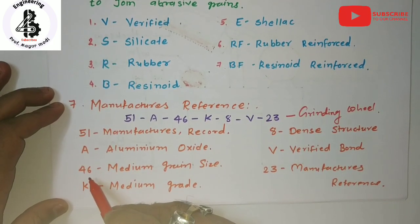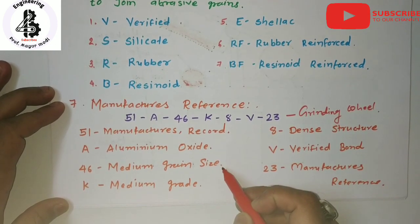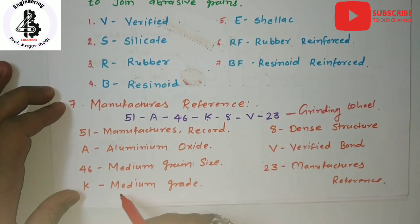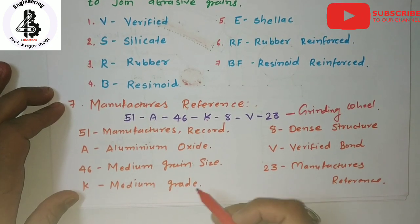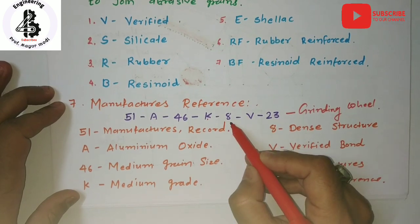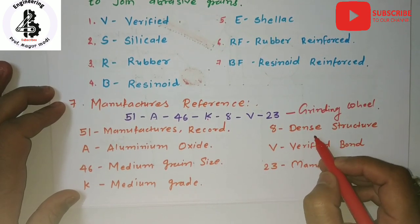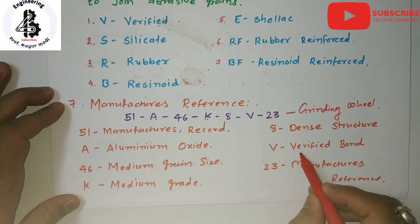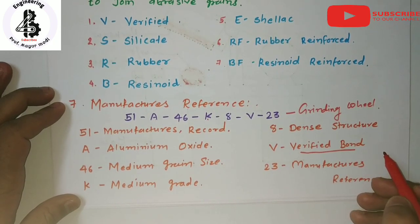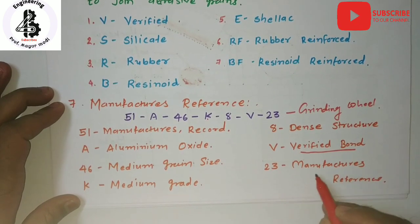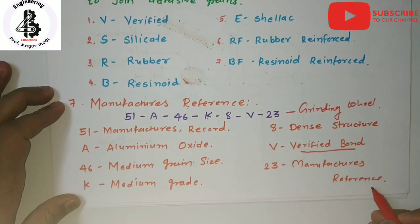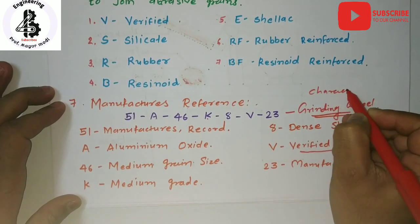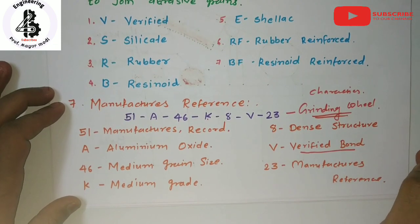Then 46 represents a medium kind of grain size being used to make the grinding wheel. K is once again an indication of medium grade used for manufacturing the grinding wheel. Then 8 represents the 8th grade of the dense structure being used. Capital V indicates a vitrified bond being used to make the grinding wheel. And last, 23 is the manufacturer's reference for identifying the grinding wheel, its characteristics, and requirements.